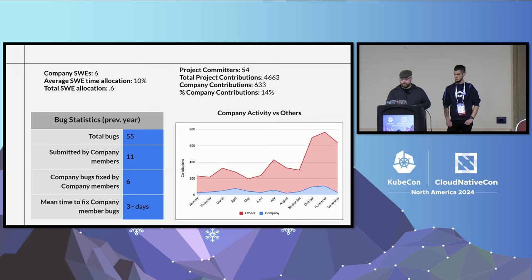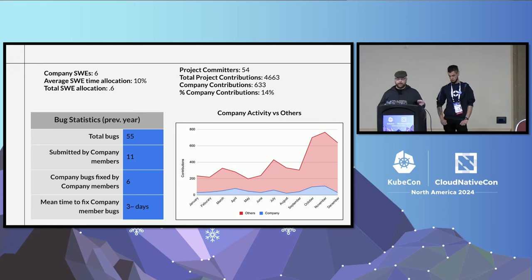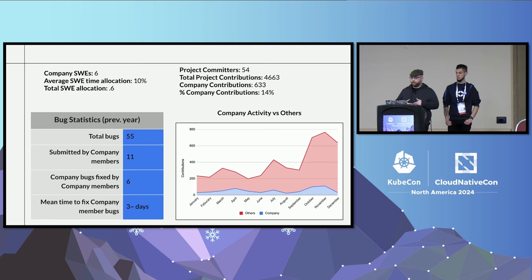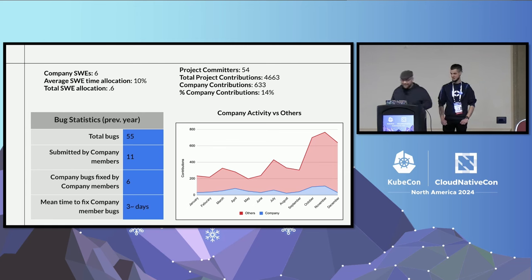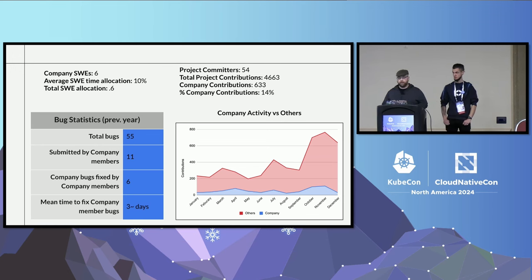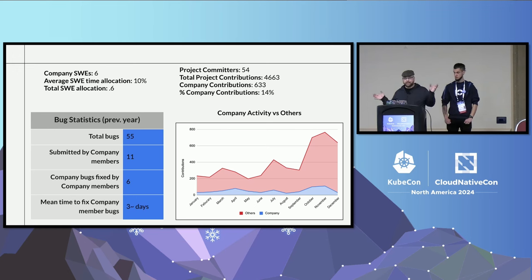But some of this I consider a trap people fall into. They use stats and information easy to generate — like the number of contributions — but don't gather more information to convey the right message to leadership. The bug statistics from one of the projects they maintained: the previous year, 11 bugs were submitted by them, but only six of the 11 were fixed by employees of that same organization. For those fixes to be reviewed, merged, and a release cut, it was a little less than three days — dramatically faster than anything they were doing internally.